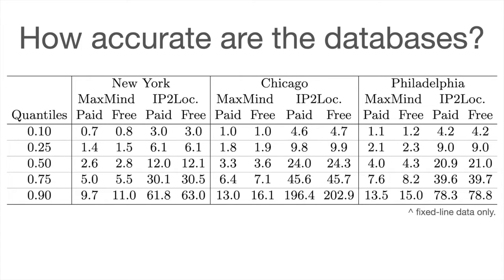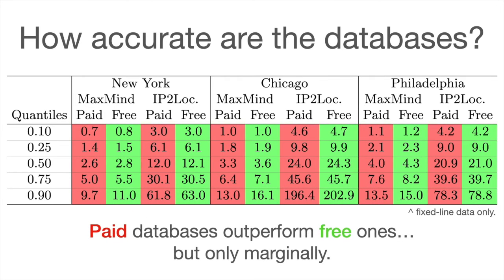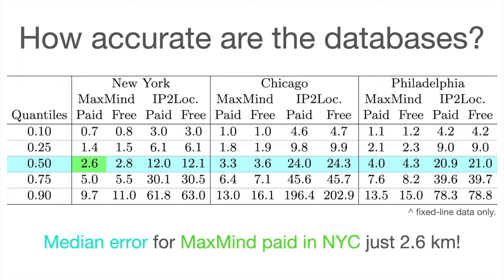So, how accurate are the databases? Here I'm showing quantiles of geolocation error by city, database, and subscription type — whether free or paid. First finding: MaxMind outperforms IP2Location in each of the three cities; the geolocation errors are smaller at each of the quantiles for either service. Comparing the paid and free databases, the paid databases do perform better — their errors are smaller — but only marginally so. We were encouraged by the performance of the geolocation databases in certain contexts: the median error on MaxMind's paid database in New York City was just 2.6 kilometers on fixed-line data. That struck us as pretty good.